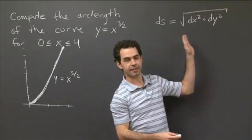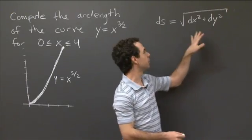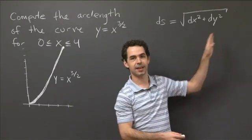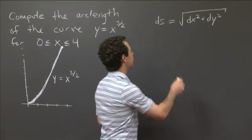And then from here, it's not very hard to get the other form, which is you can divide through by a dx squared inside and multiply by a dx outside.